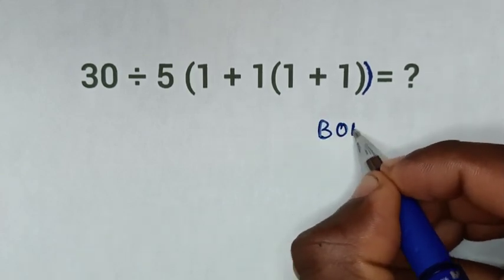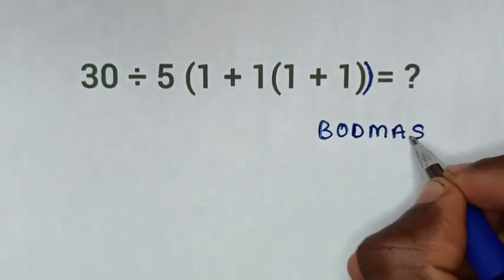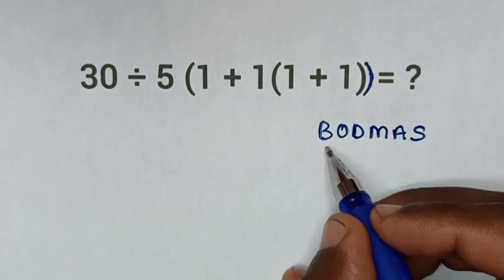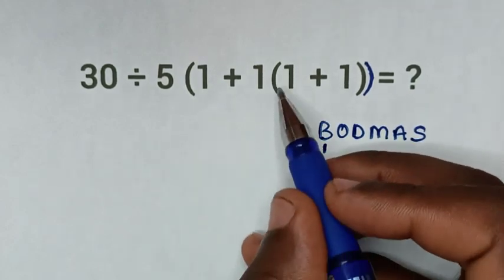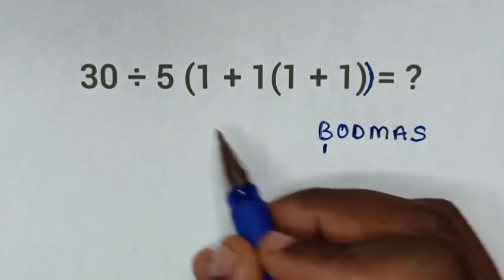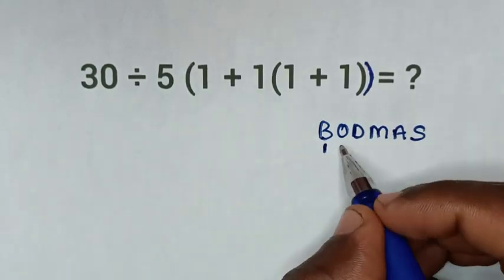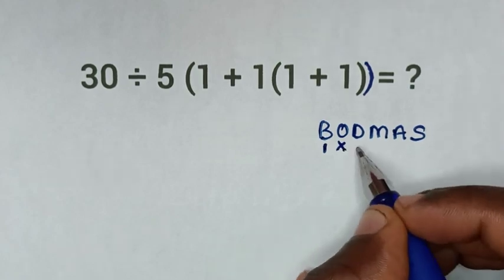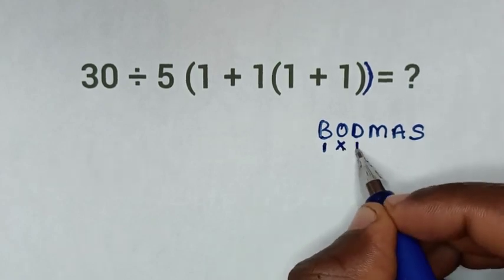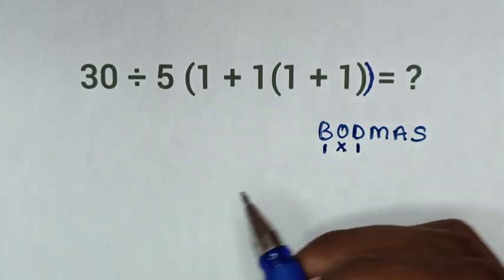From BODMAS, B is Bracket — we have this inner bracket and this outer bracket. O is Order or Exponent — we don't have order or exponent. D is Division — we have division here of 30 divided by 5.